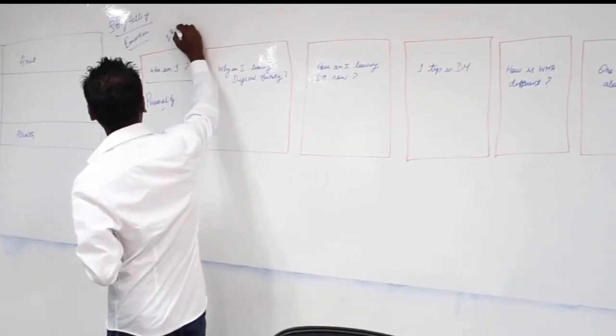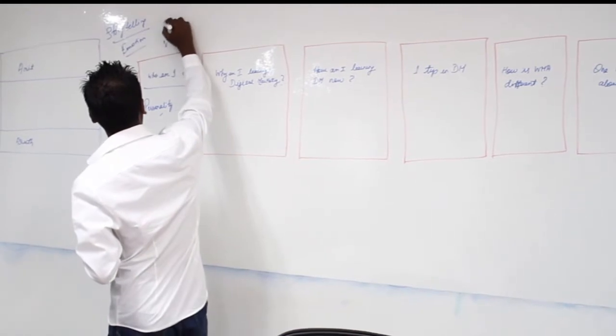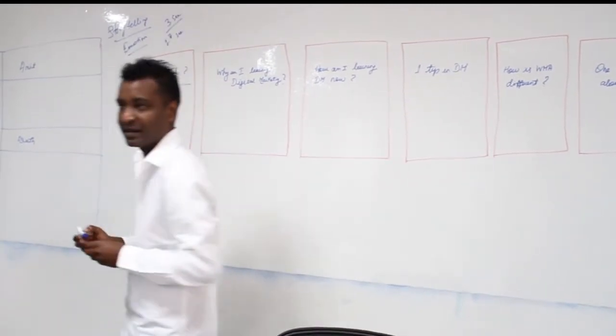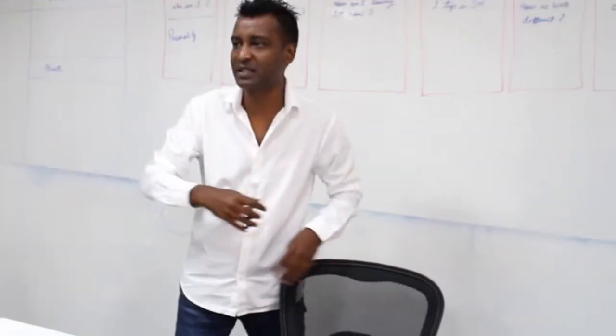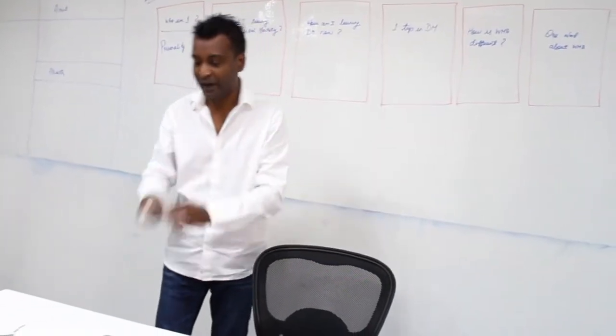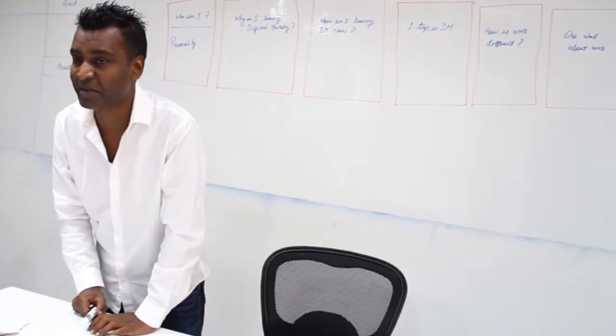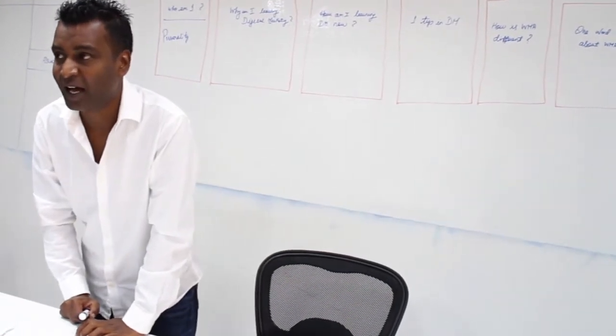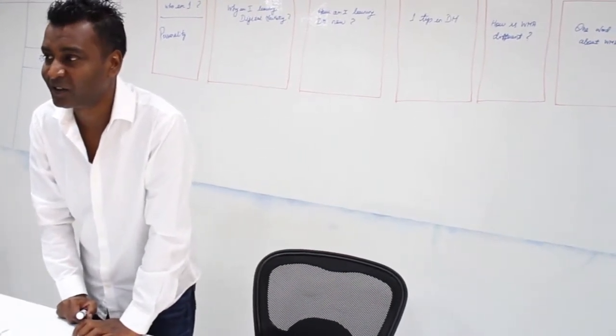This is the first thing that people see, so in the first three seconds we need to capture their attention. You can either say "my name is Suresh," or I can bring a knife and chop vegetables and then say "I'm Suresh, I am a chef." See, there's a difference, right? So now you're curious, what is this guy doing?